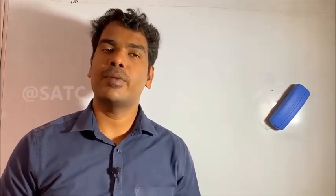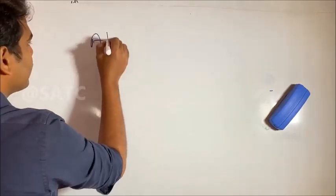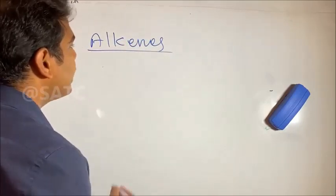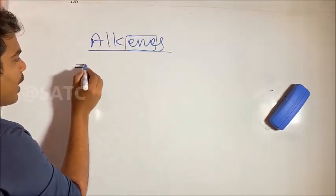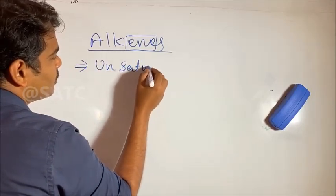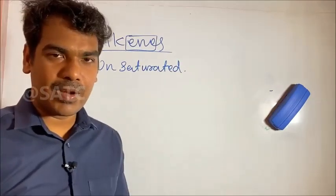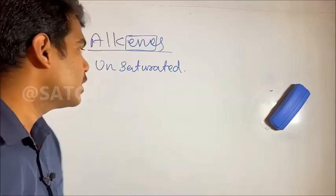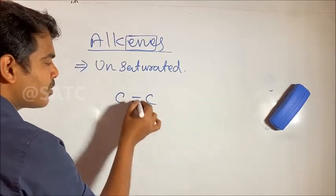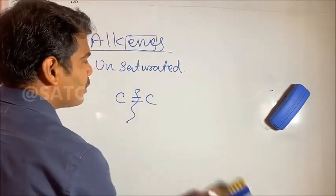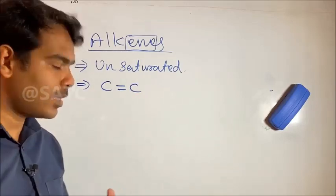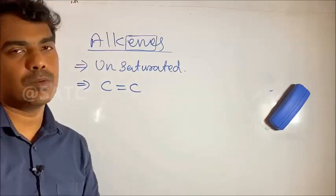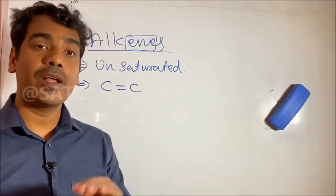So the next typology series is alkenes. After alkanes, we do alkenes. They are not completed — they have a chance to be unsaturated hydrocarbons. If they are unsaturated, they will have carbon-carbon double bonds. When a reaction occurs, the double bond breaks to a single bond and gets compounded. That's why they are unsaturated.